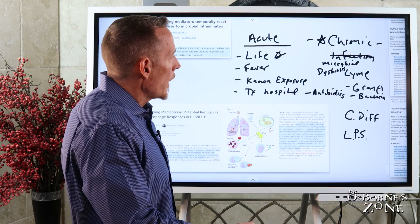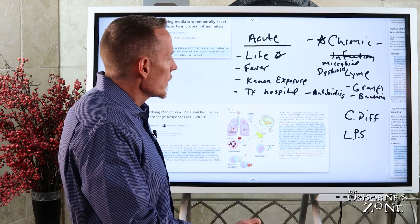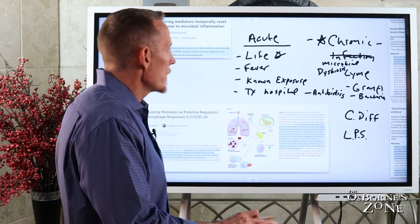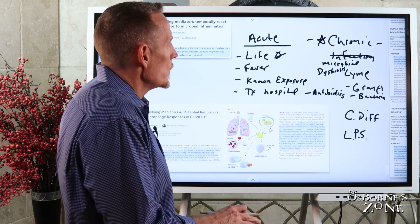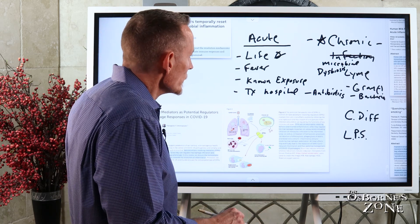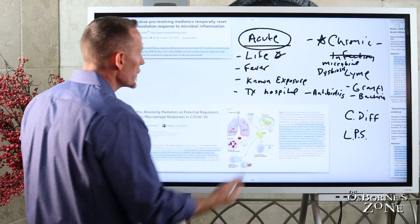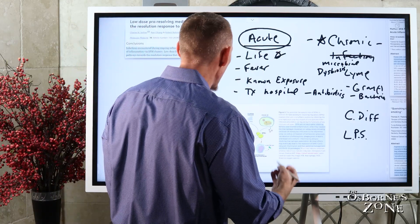This is why these things are linked to the development of autoimmunity and autoimmune problems. One of the things we know about resolvents, about SPMs, is they can help reset the immune system response, especially as it relates to after an acute infection, because sometimes what happens, if you've heard of long COVID, many of you have,